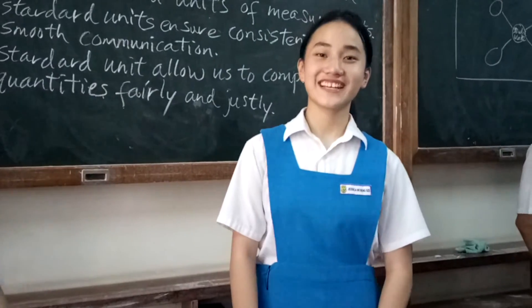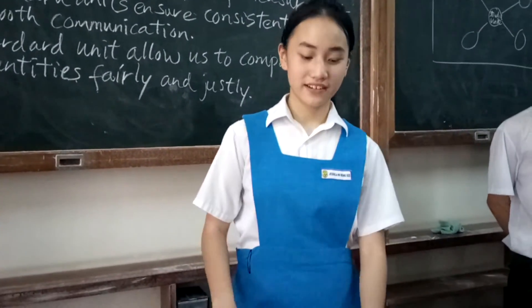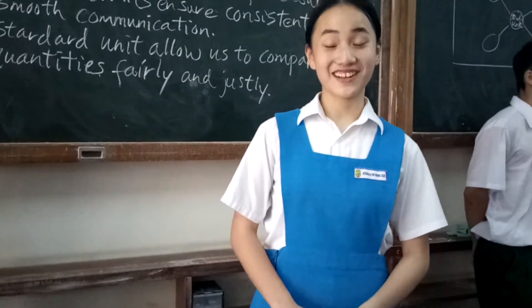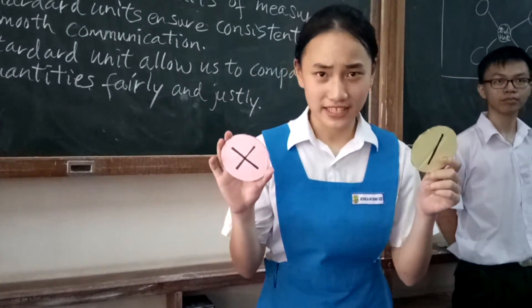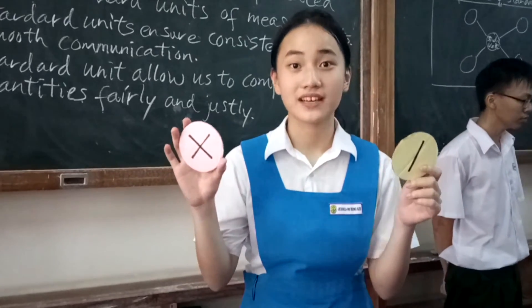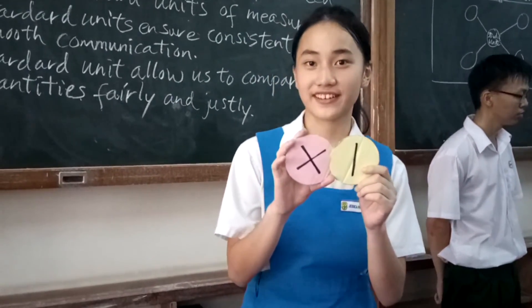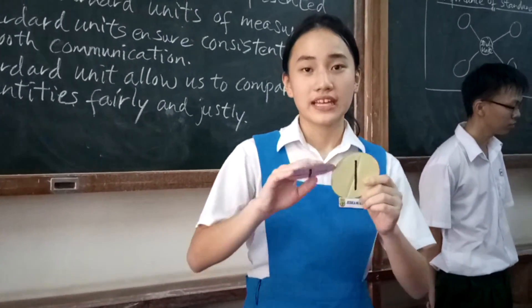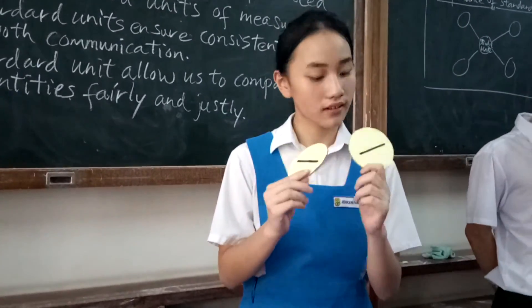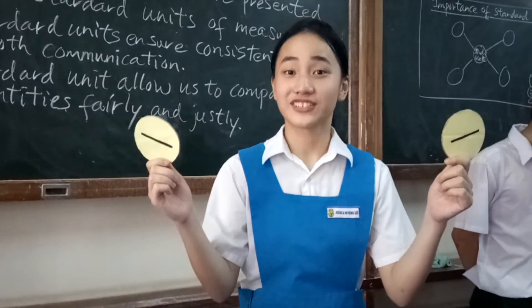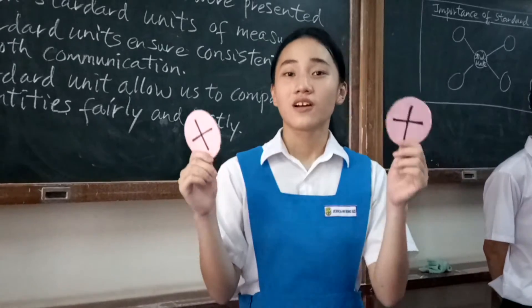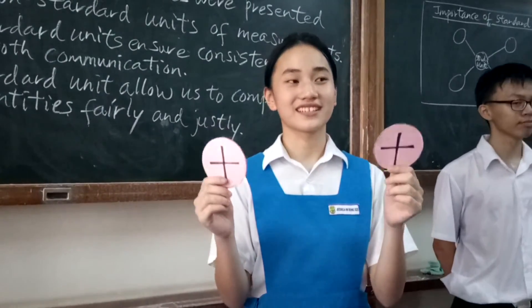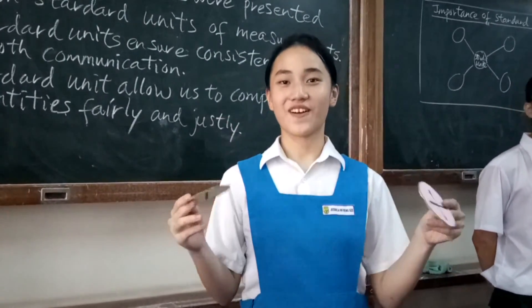To conclude our lesson today, we are going to talk about positive charges and negative charges. If two objects have different charges, they will be attracted to each other. In the same way, if they have the same charges — for example, negative and negative — they will repel and won't attract each other. This works the same way regardless of whether the charges are positive or negative.